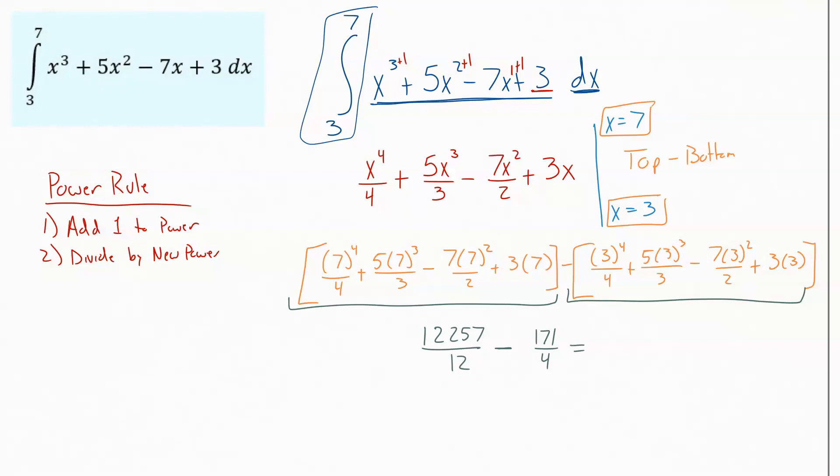And then to get your final answer, you just subtract those two values. And so out of there, you would get the final answer of 2,936 over 3. And so that is the net area between the curve and the x-axis between 3 and 7. And that's your final answer.